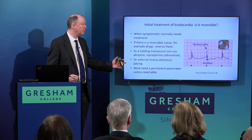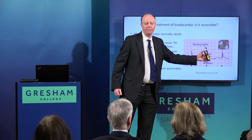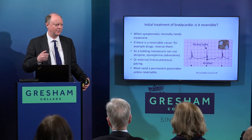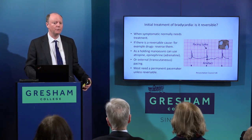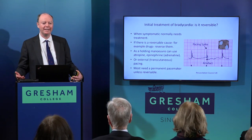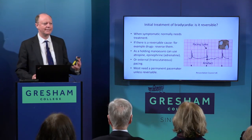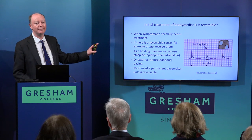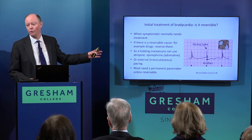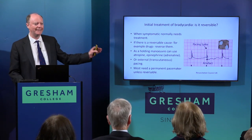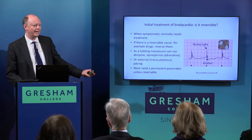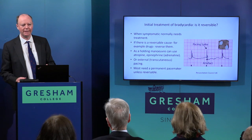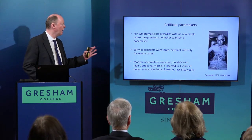Another option is external pacing — placing pacing pads on the patient and delivering a shock across the chest regularly to fire the heart at a sufficient rate. It's not comfortable, but it keeps the patient alive. In general, external pacing or temporary drugs are used to hold the line until something more definitive can be done. The final long-term outcome for persistent bradycardias is almost always a pacemaker — there aren't drugs suitable for keeping the heart going over long periods.